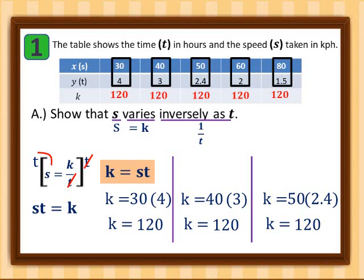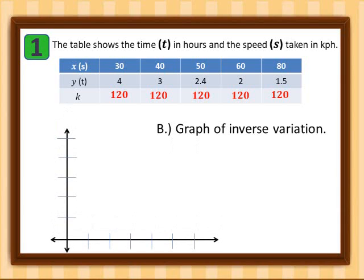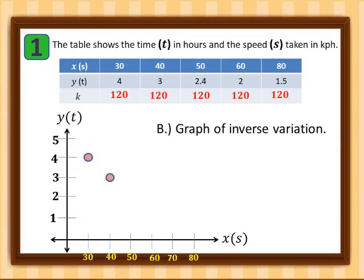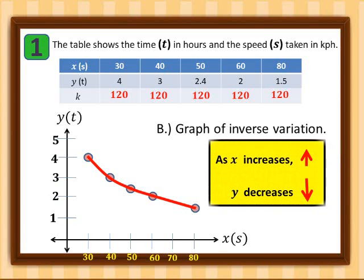Now let's look at the graph of our inverse variation. The x-axis represents speed and the y-axis represents time from 1 to 5 hours. We plot the points: speed 30 at 4 hours, speed 40 at 3 hours, speed 50 at 2.4, speed 60 at 2 hours, and speed 80 at 1.5 hours. As speed increases, time decreases — that is inverse variation.